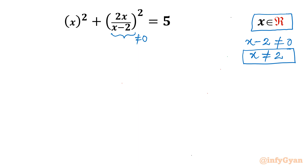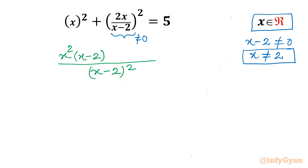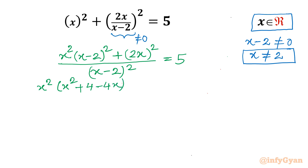Now I will begin by making our denominator common using LCM. Writing denominator (x - 2)² common, I need to write x² times (x - 2)² plus (2x)² in the numerator, with the right hand side equal to 5. Now I will expand using the (a - b)² formula: x² times (x² + 4 - 4x), and 2x whole square gives 4x².